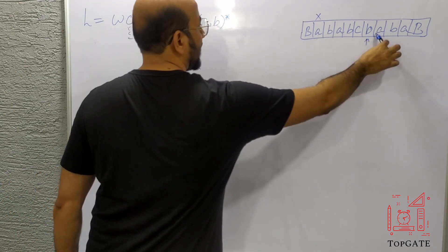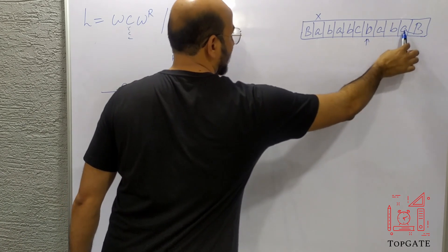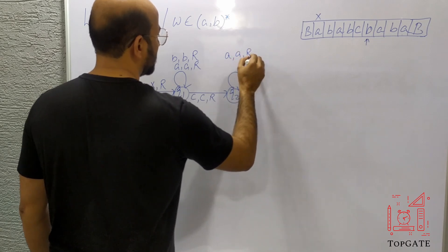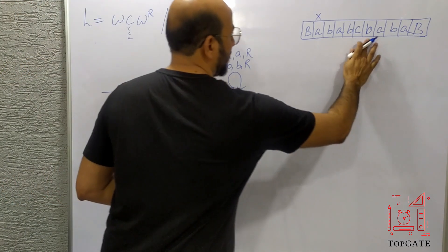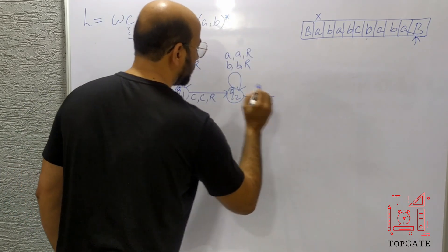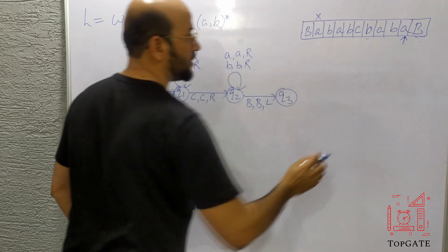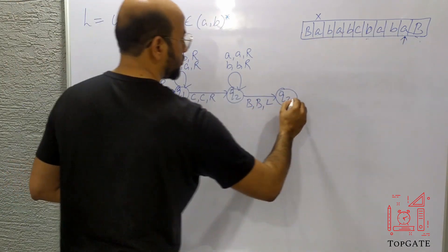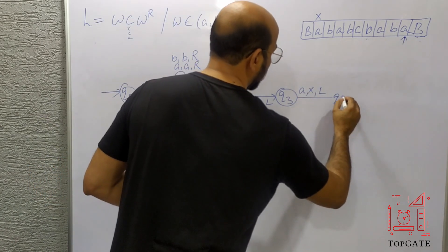At Q2, I need to skip everything to reach the last element. So I take a self-loop: skip all A's move right, skip all B's move right. Finally the pointer reaches the blank. So if you find blank, let it be blank and move left, going to state Q3. At Q3, the pointer is now on the last A. I change this A to X and move left, going to state Q4.